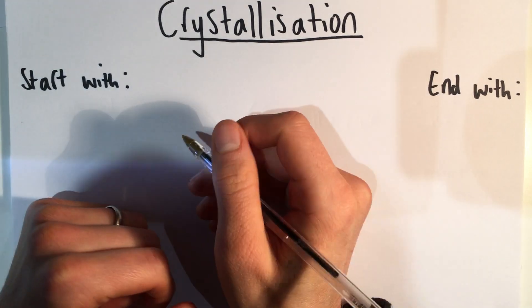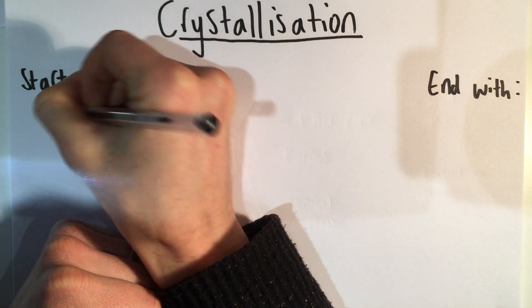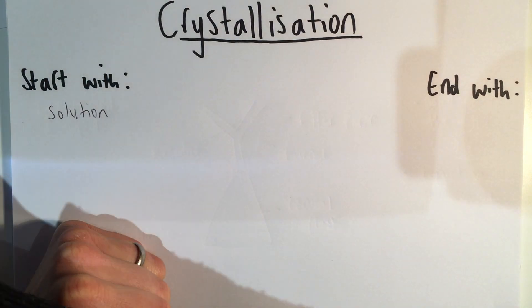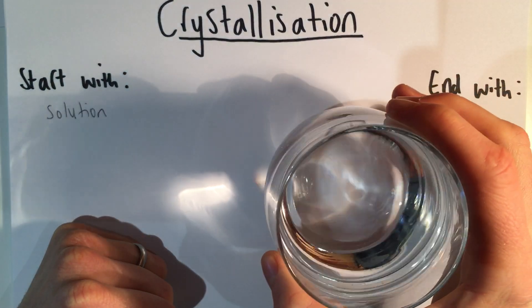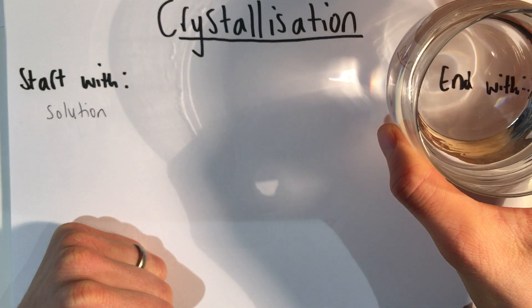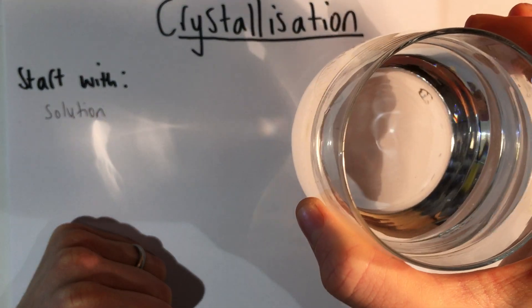Crystallization is the separation technique we need to use if we have a solution. In this example, I've got some sugar water. We can tell that it's a solution because you can see through it - it's clear, so that sugar is dissolved in the water. It looks just like water.